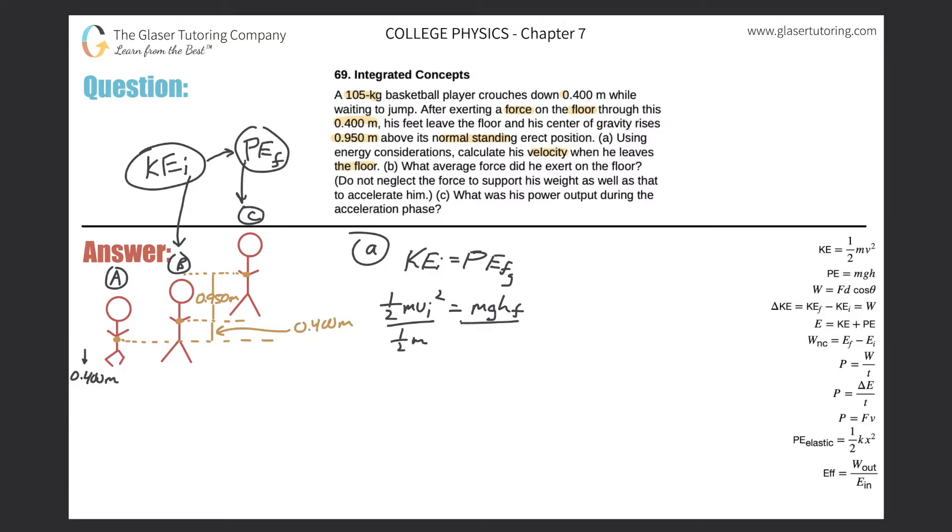Divide out the one half m from this side, and then same thing on the other side. So here we have the initial velocity squared will equal mgh all over one half m. The m's will cancel here, so they'll go bye bye, and then I got to take the square root of both sides.